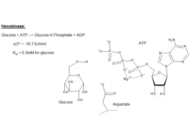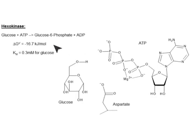This is the first true reaction in glycolysis, even though it's not truly committed to glycolysis. It's the hexokinase reaction, where glucose reacts with ATP to be phosphorylated to glucose-6-phosphate and to release an ADP. This is a very favorable reaction because it's coupled to ATP.